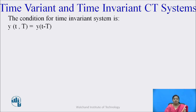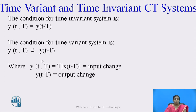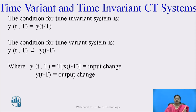The condition for a time invariant system is y(t, T) equal to y(t − T). The condition for a time variant system is y(t, T) not equal to y(t − T). Here y(t, T) is nothing but the transform of x(t − T), meaning a change in the input, and y(t − T) is the output change. So if the input change equals the output change, the system is time invariant. If the change in input does not equal the change in output, then that system is called a time variant system.